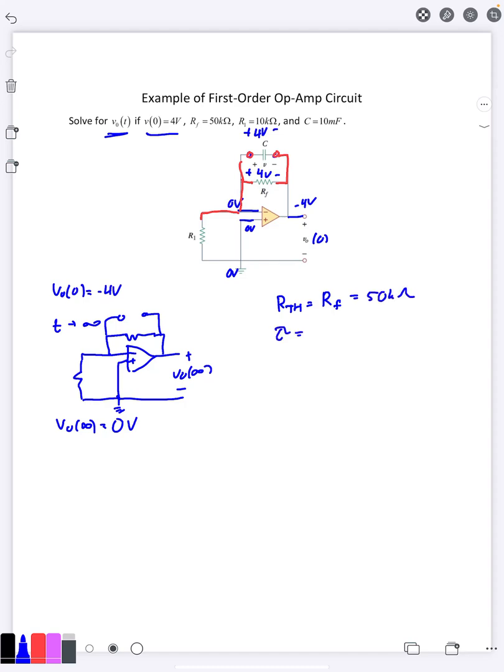So then my time constant, which is R_thevenin C, is 50 kilo ohms times 10 millifarads. So 50 times that's going to be 500 seconds here.